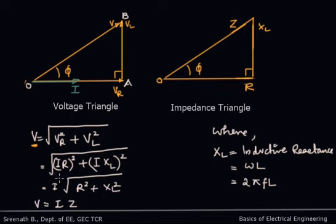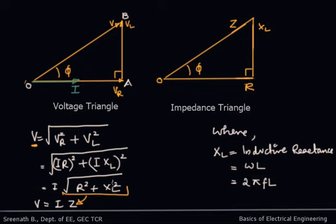The source RMS voltage V can be written as √(Vr² + Vl²) = √((IR)² + (I×XL)²), which simplifies to I × √(R² + XL²). This term √(R² + XL²) is written as Z, the impedance of the circuit. Impedance is defined as the effective opposition to the flow of alternating current in a circuit comprising resistive and reactive elements. From this, an impedance triangle can also be derived, where R and XL are the components and Z is their resultant.